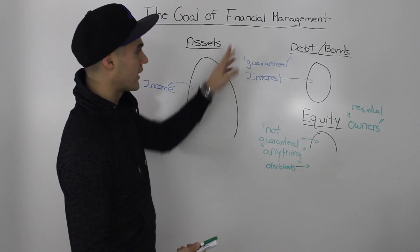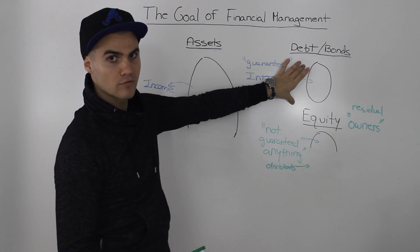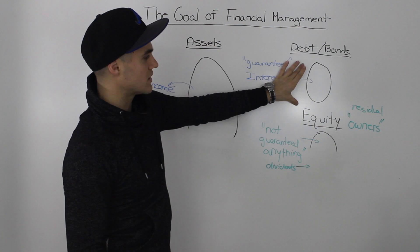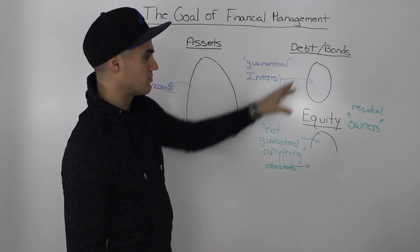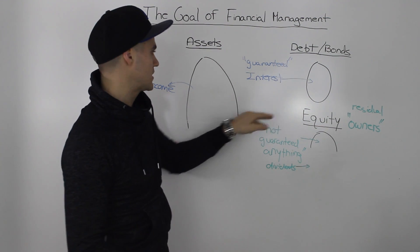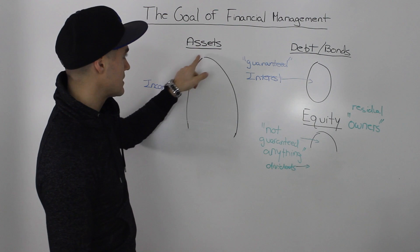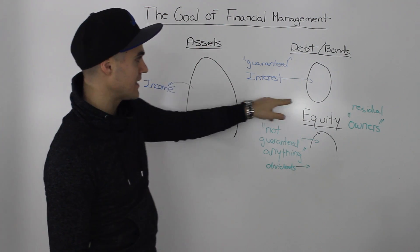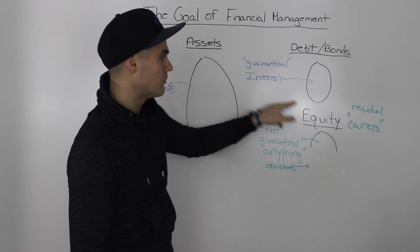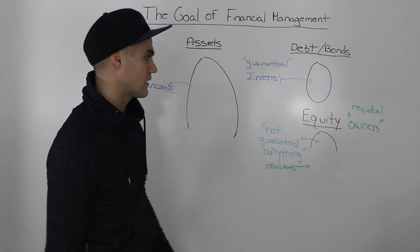Maybe the goal of financial management is to maximize the bondholder value. Well, if we just focus on the bondholders, the problem is that the equity holders are going to be neglected — we only need the assets to be as big as the bondholders' piece of the pie, and the equity holders wouldn't get anything.